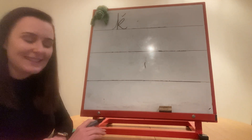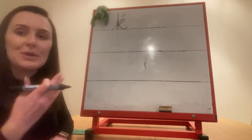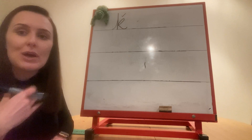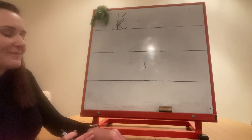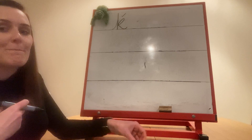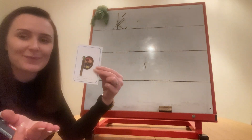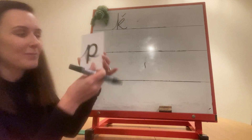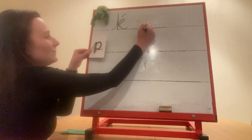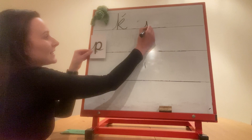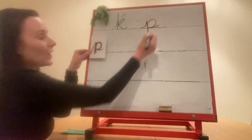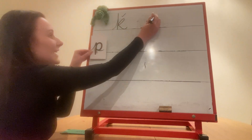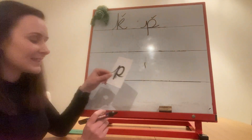The next speed sound is P, p. Write it. Have you done it? Let's check. P, p — pirate. It's this one: up we go, down the pirate's plat, around his face, and off you go. If yours looks like mine, give it a tick or fix it. Tick or fix.